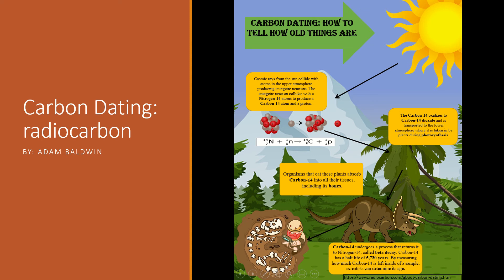Carbon dating is a relatively simple process, and it begins in the sky. Cosmic rays from the sun will collide with atoms in the upper atmosphere and they produce energetic neutrons. These energetic neutrons then collide with nitrogen-14 atoms to produce a carbon-14 atom and a proton. Carbon-14 acts very similar to carbon-12, and it oxidizes in the atmosphere to carbon dioxide, where it is then transported to the lower atmosphere, where it is then taken in by plants during photosynthesis. Organisms that eat these plants absorb carbon-14 into all their tissues, including their bones.